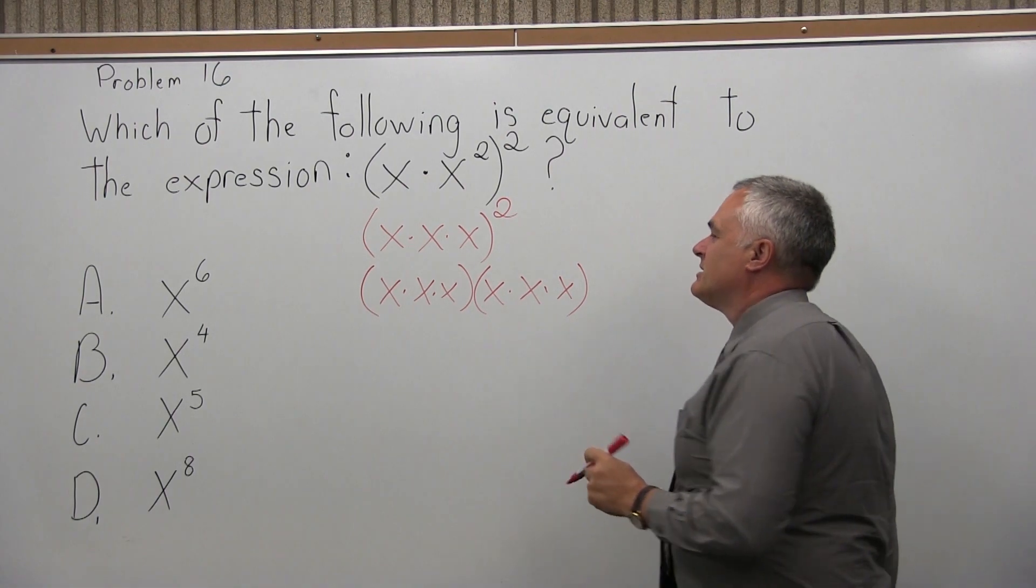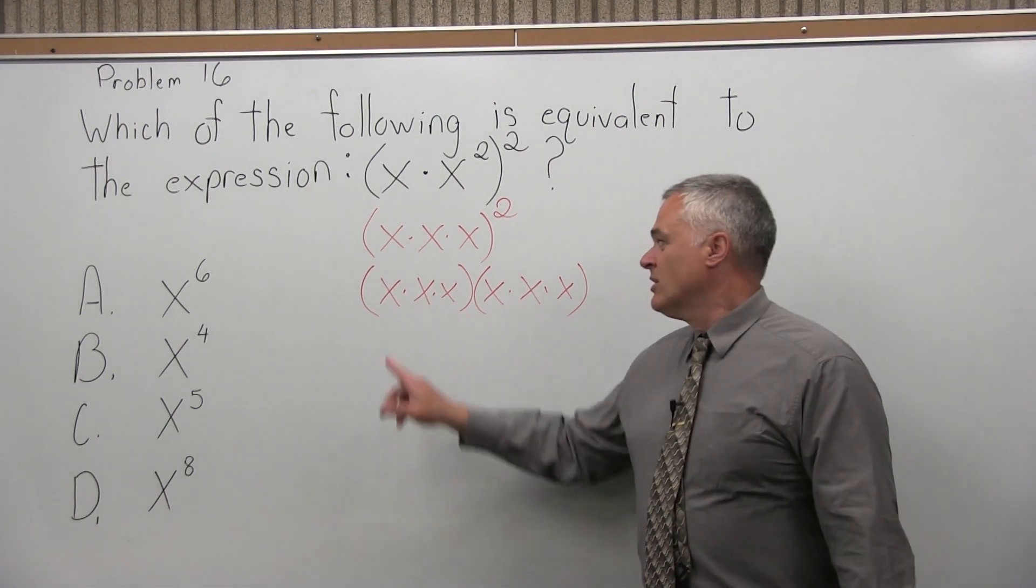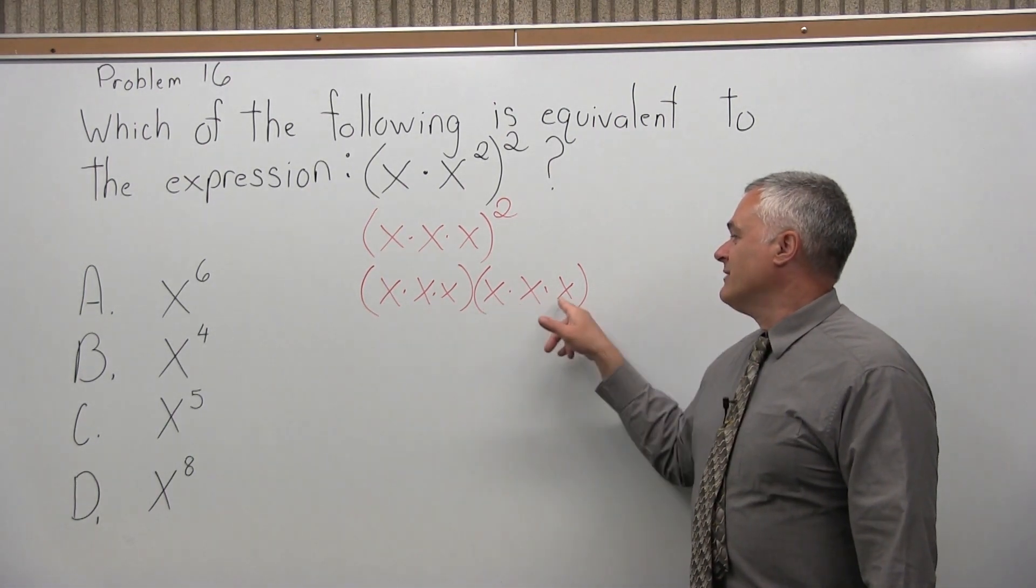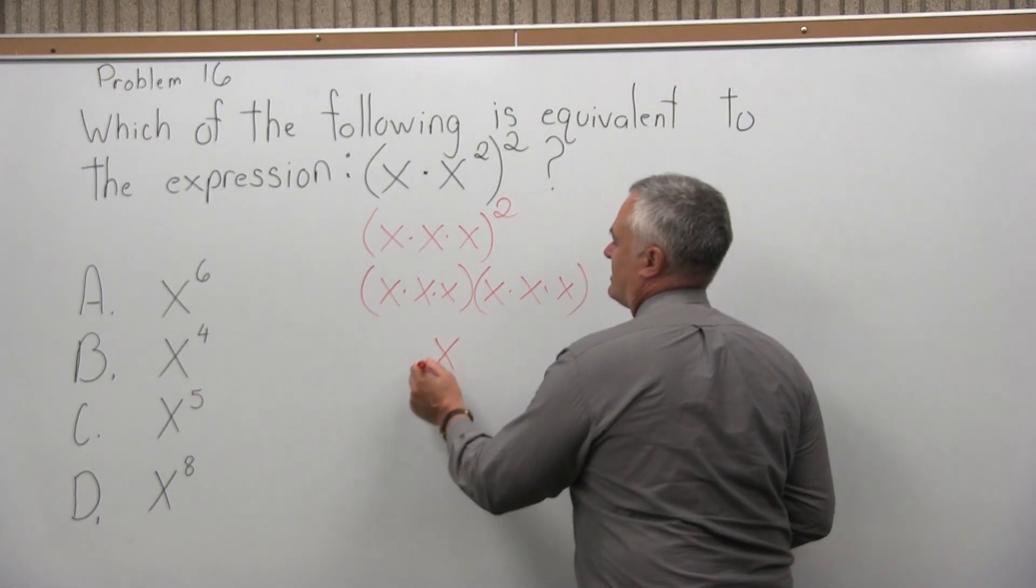So now we can count how many x's are being multiplied times each other: 1, 2, 3, 4, 5, 6. So this is the same as x to the sixth power.